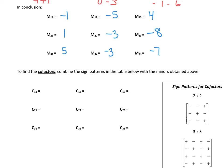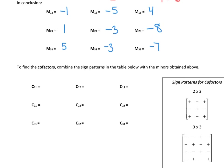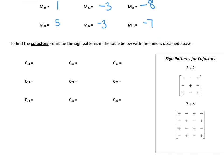To find the cofactors, we're going to combine the sign patterns in this table with the minors obtained above. The sign pattern for a 2 by 2 starts positive, negative, positive, negative, and so on. The same concept applies for a 3 by 3, so this one is plus, minus, plus, minus, and so on. Following this pattern all the way through, we get: plus, minus, plus — minus, plus, minus — minus, plus, minus.